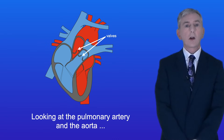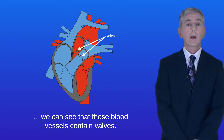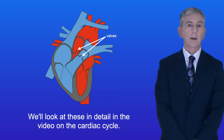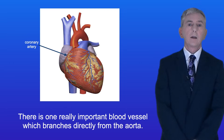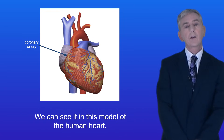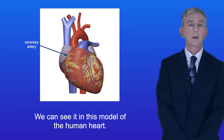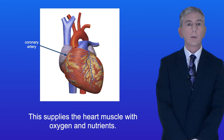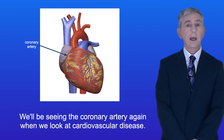Looking at the pulmonary artery and the aorta, we can see that these blood vessels contain valves, which we look at in detail in the video on the cardiac cycle. There's one really important blood vessel which branches directly from the aorta, visible in this model of the human heart. This is called the coronary artery and it supplies the heart muscle with oxygen and nutrients. We'll be seeing the coronary artery again when we look at cardiovascular disease.